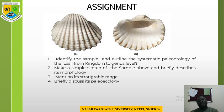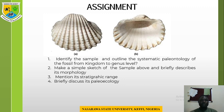Take-home assignment: from specimens A and B — A showing the external morphology and B showing the internal morphology — you must: one, identify the sample and outline the systematic paleontology of the fossil from the kingdom to the genus level; two, make a simple sketch of the sample and briefly describe its morphology; three, mention its stratigraphic range; and four, briefly discuss its paleoecology. Thank you for your attention and see you in the physical class.